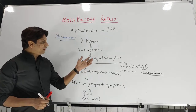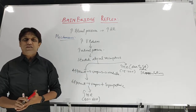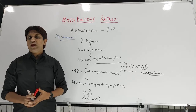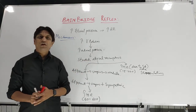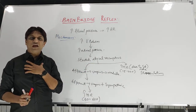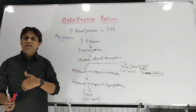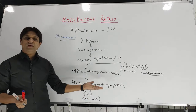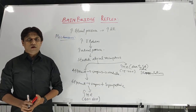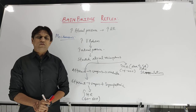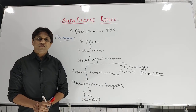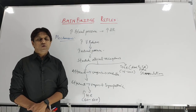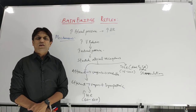This reflex is also seen in respiratory sinus arrhythmia. During inspiration, intrathoracic pressure decreases, which causes an increase in venous return, leading to an increase in atrial pressure and stretching of atrial stretch receptors, which ultimately causes the increase in heart rate during inspiration compared to expiration. If you like our video, please subscribe to our channel Doctor's Corner on YouTube, share the link with your friends, comment, give your feedback, and like our video. Thank you very much.